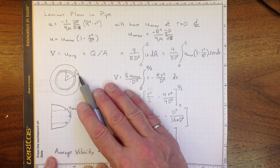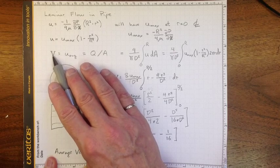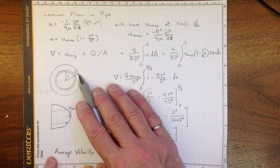We'd like to find out what the average velocity is, the capital V that we use in Bernoulli's equation, and use a lot. That capital V is the average of the u velocity.